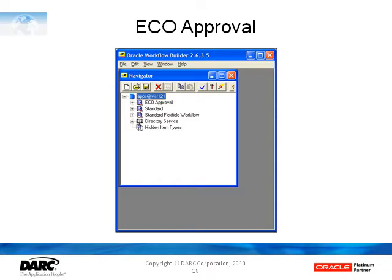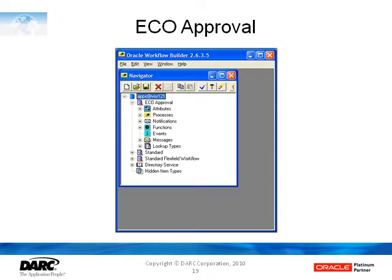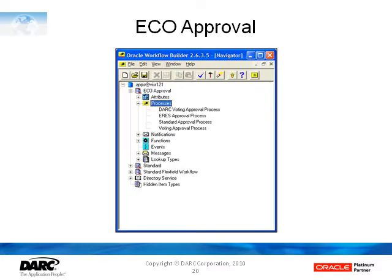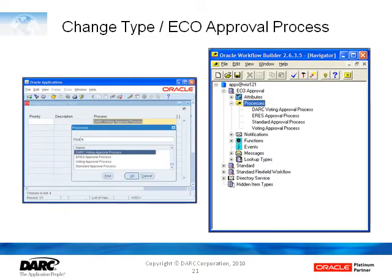We'll click on the ECO Approval branch, which shows the various components of the workflow. We will focus on the Processes branch by clicking on it. There we see the same four workflow processes that we saw in the Engineering Change Order type form, and here we have the form and the processes in Workflow Builder side-by-side just to demonstrate that.